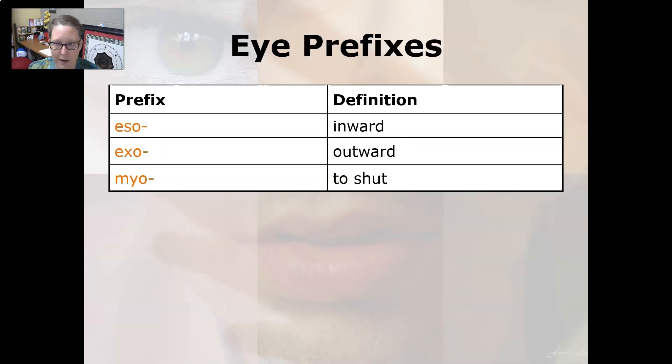Some eye prefixes: eso- is inward, and exo- is outward, and myo- is to shut — think of squinting the eyes.